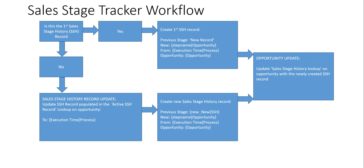Now think about when this workflow is being triggered: every time we go from one stage to the next in the business process flow, because that updates the pipeline field — or 'step name' by system name — on the opportunity. What it's going to do is check two conditions. It's going to check whether or not this is the first sales stage history record by checking if the sales stage history lookup field on the opportunity has data in it or not. The first time it's not going to have data, so it will take the 'yes' path — this is the first sales stage history record.